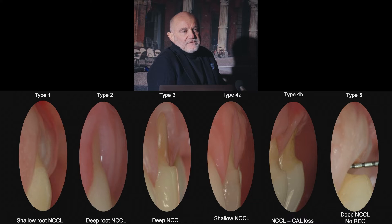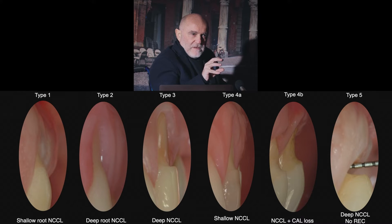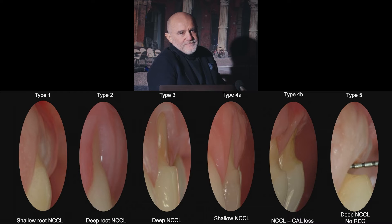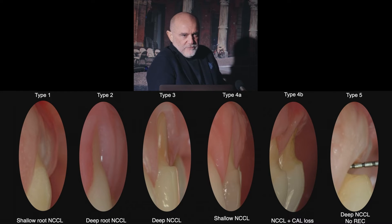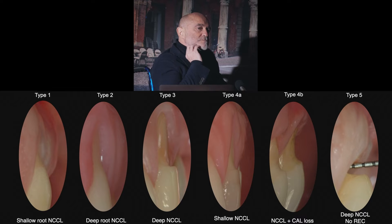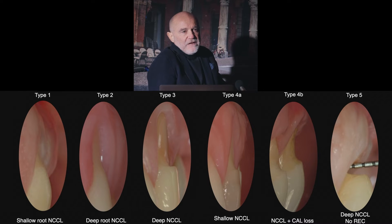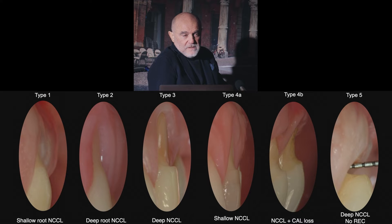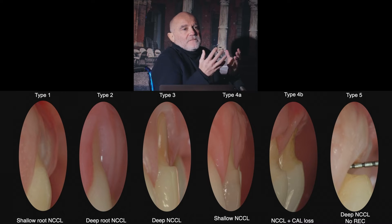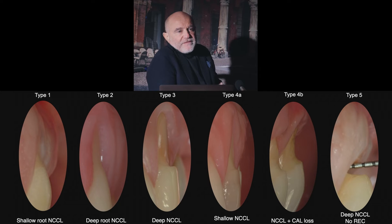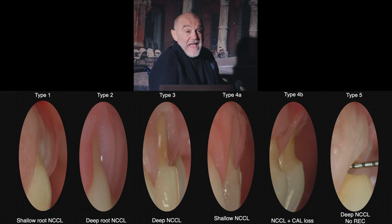We are now focusing on teeth and gingival recession around teeth. Gingival recession around teeth is an exposure of the root, with exposure of the cementoenamel junction. The dimension of the gingival recession is measured as the distance between the cementoenamel junction and the soft tissue margin.